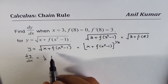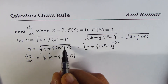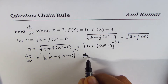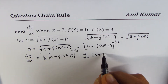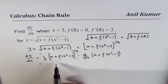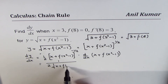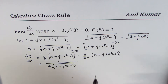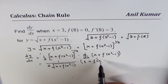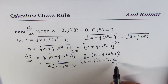One half of the whole function, x plus f(x² − 1), to the power of half minus one — that gives minus one half — times the derivative of the inside function, d/dx of x plus f(x² − 1). The derivative of x is 1, and derivative of f(x² − 1) requires the chain rule again: f′(x² − 1) times d/dx of x².